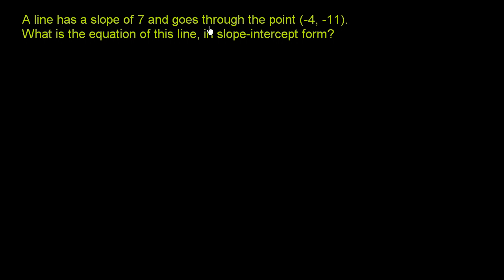A line has a slope of 7 and goes through the point negative 4, negative 11. What is the equation of this line in slope-intercept form?